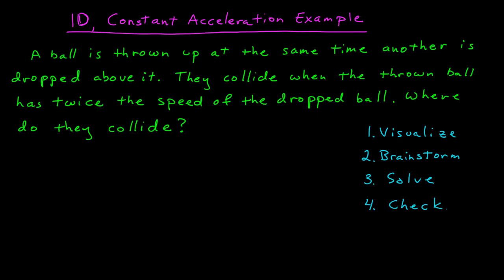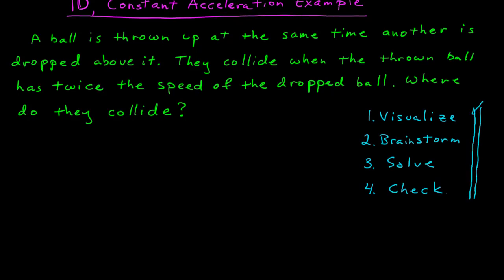I want to do an example under the conditions of one dimension and constant acceleration. In particular, I'd like to use this example to demonstrate a strategy in solving problems. The problem is this: a ball is thrown up at the same time another ball is dropped above it. They collide when the thrown ball has twice the speed of the dropped ball. Where do they collide?